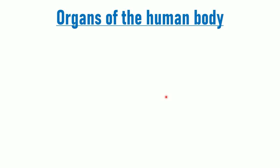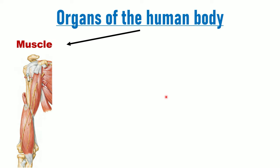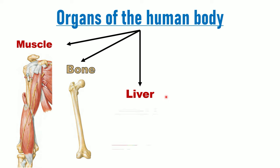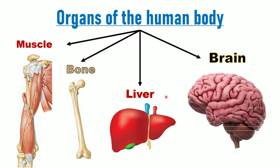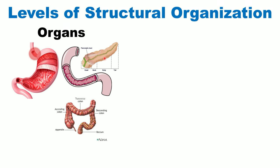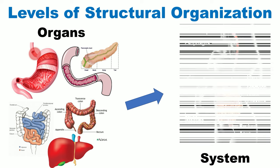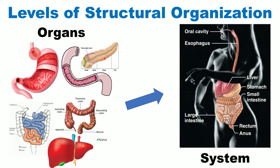We have many organs in the human body. For example, we have muscle — which is composed of muscular tissue and also connective tissue — bone, the liver, which is the second biggest organ of the human body, and the brain. These are just examples; we have many other organs. Several organs will come together to give us a system — for example, the digestive system — moving from level seven to level eight of structural organization.